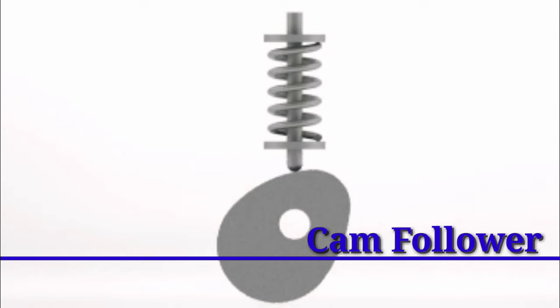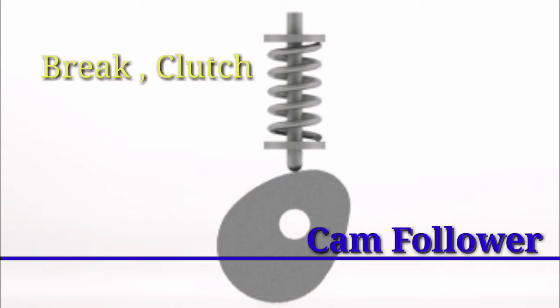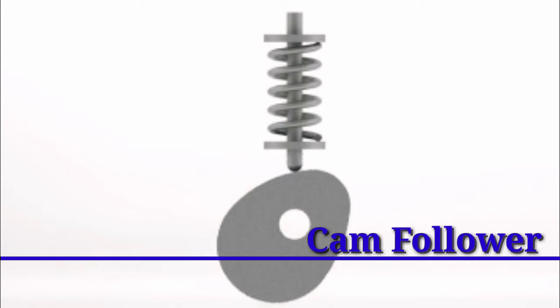For motion control, a good example is the cam follower. In the cam follower mechanism there is a spring that controls the motion. This is what our machines use — springs for motion control in components like the cam follower.